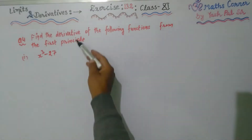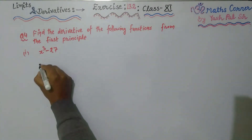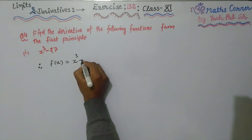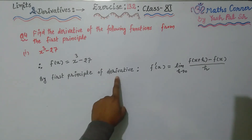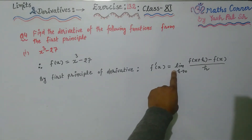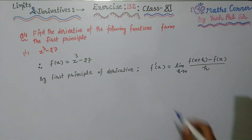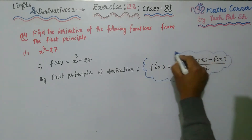Question number 4: find the derivative of the following functions from the first principle. First part: f(x) = x³ − 27. By the first principle of derivative, f'(x) = limit h→0 of [f(x+h) − f(x)] / h. So we write f'(x) = limit h→0 of [(x+h)³ − 27 − (x³ − 27)] / h. This is the first principle formula.